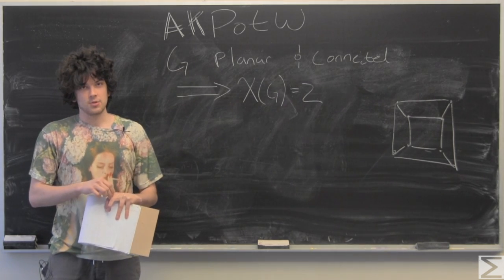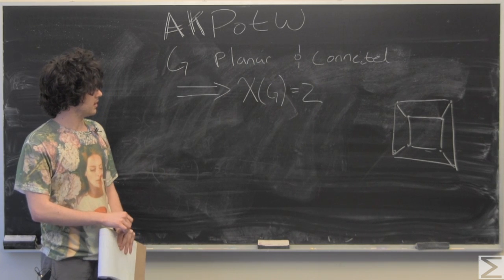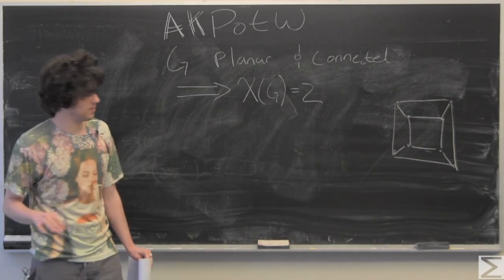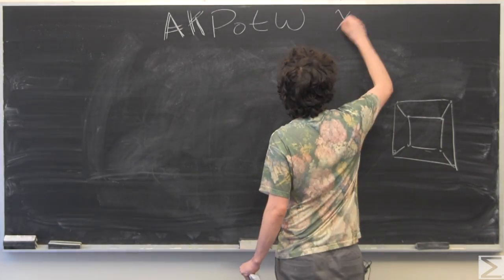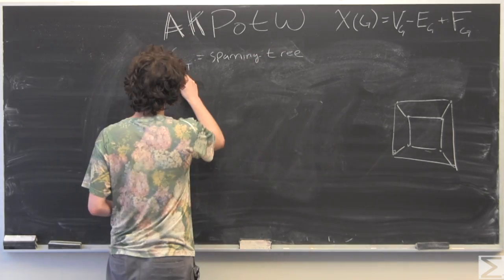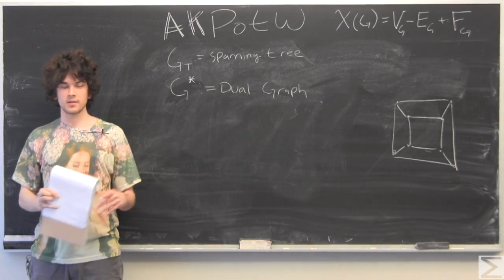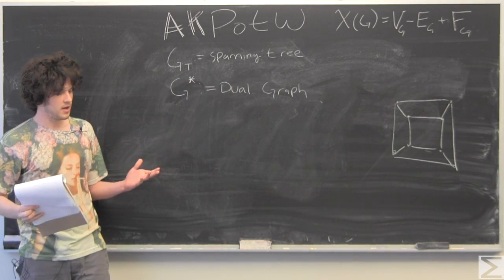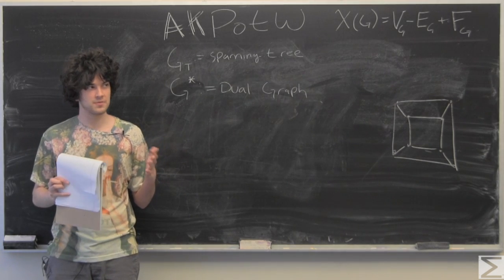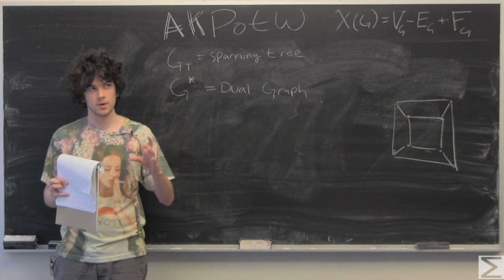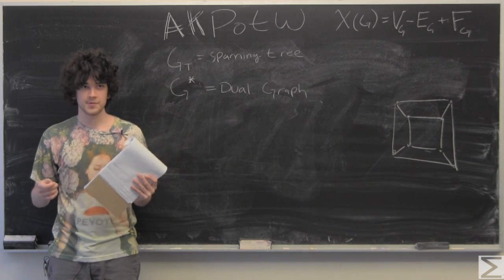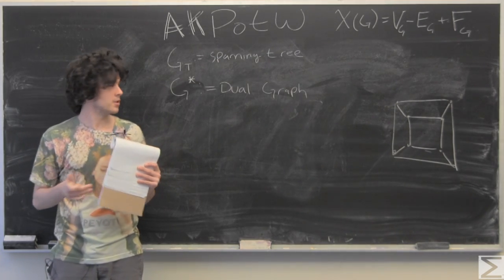We're going to prove that the Euler characteristic of any planar and connected graph is equal to 2. First, we need some basic underlying notions. A connected graph means there are no vertices or sets of vertices isolated from others — if you think of roads connecting vertices, you can get to every vertex. Planar graphs can be drawn on a plane without overlapping edges.